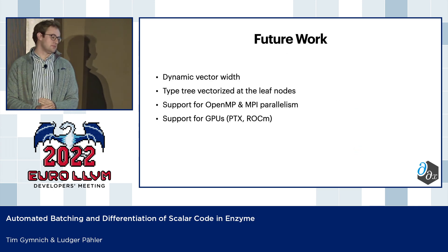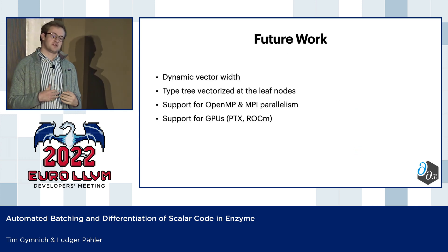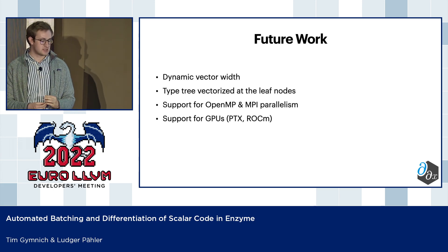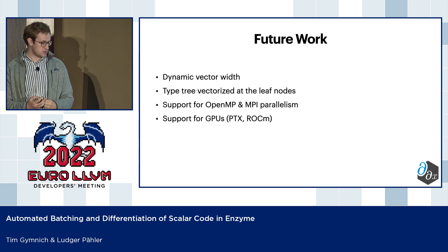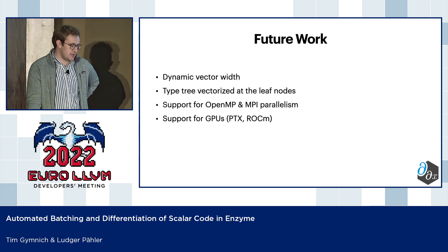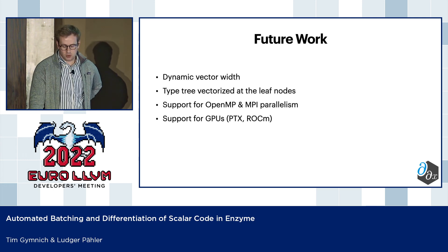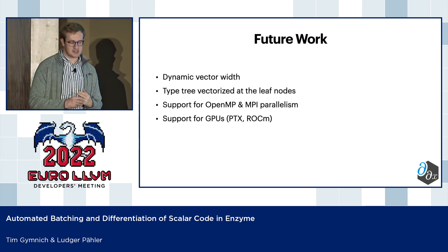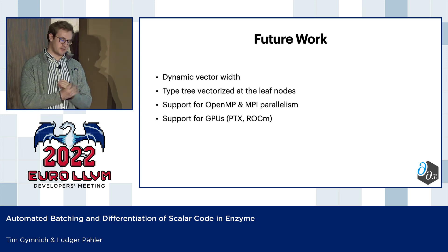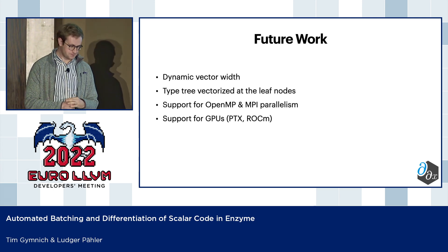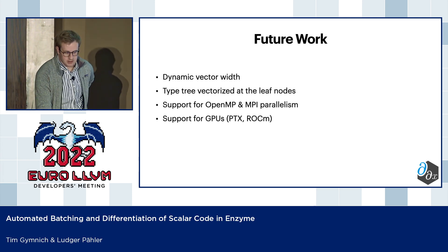For future work: right now we always have to assume a static vector width, so dynamic vector width is something that needs to be looked at. There is also a different approach to type tree vectorization to consider. Right now there's no verification for forward mode with OpenMP/MPI calls, whereas reverse mode already handles those in theory. And there's no GPU support for forward mode and vectorization yet.